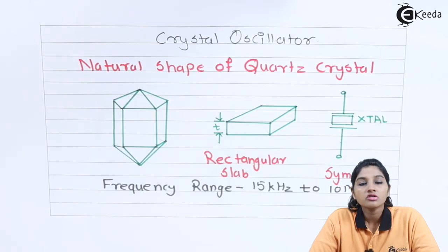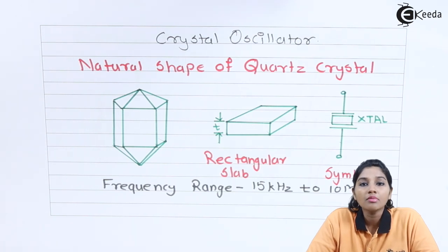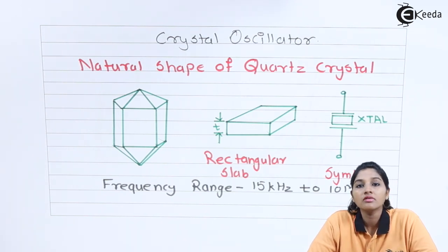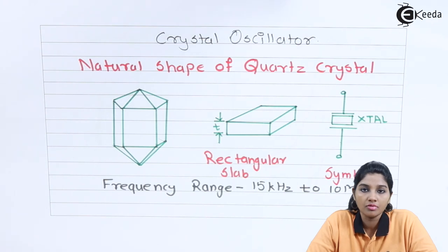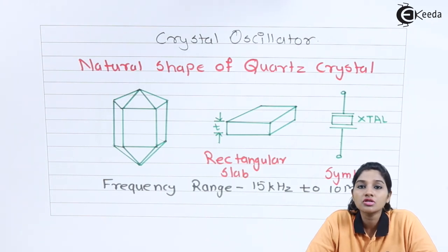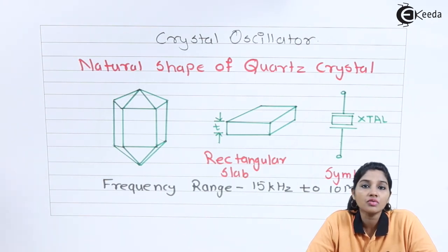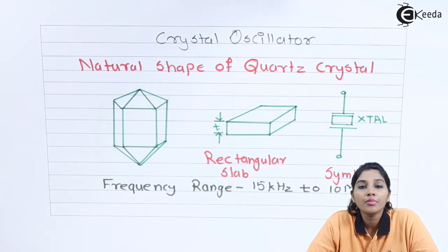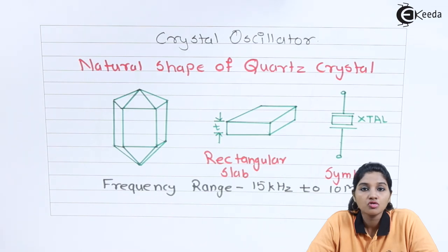Crystal oscillators are basically a type of sinusoidal oscillator and they are used to produce a sine wave at the output. They are used in applications where high frequency stability is important. Crystal oscillators use a piezoelectric crystal as a resonant tank circuit.